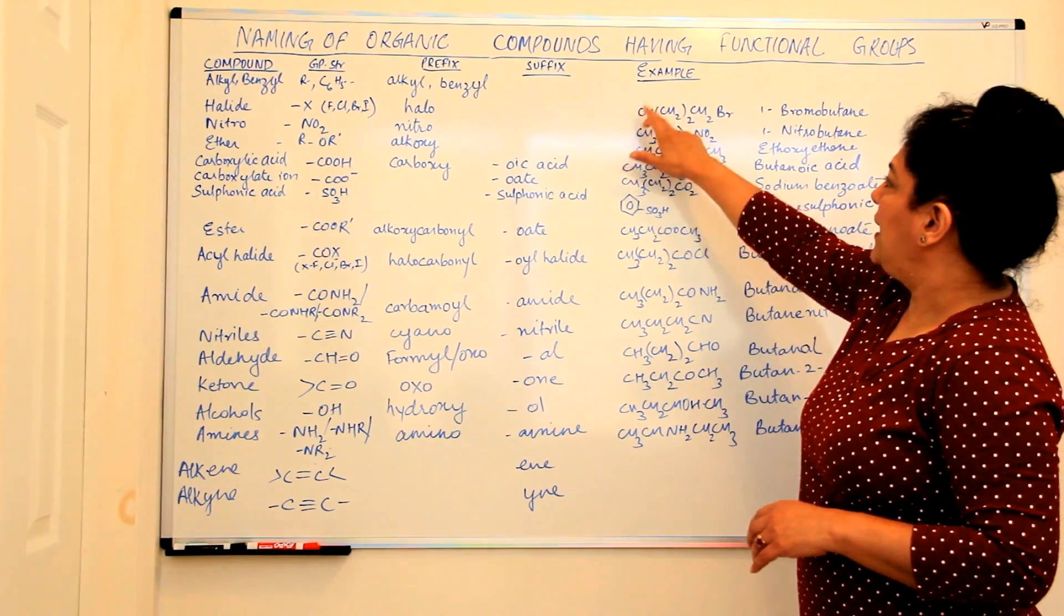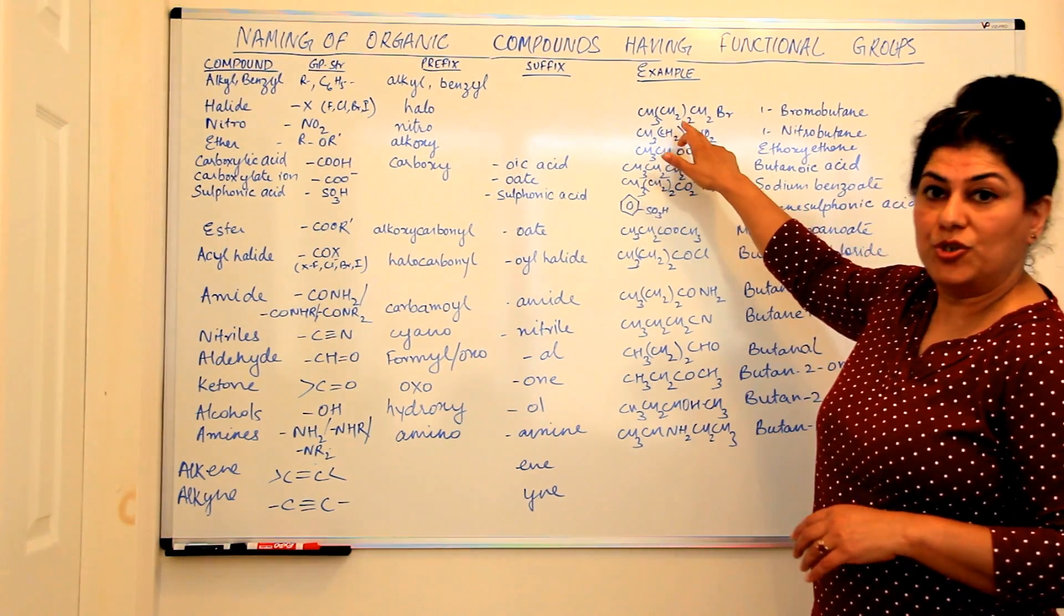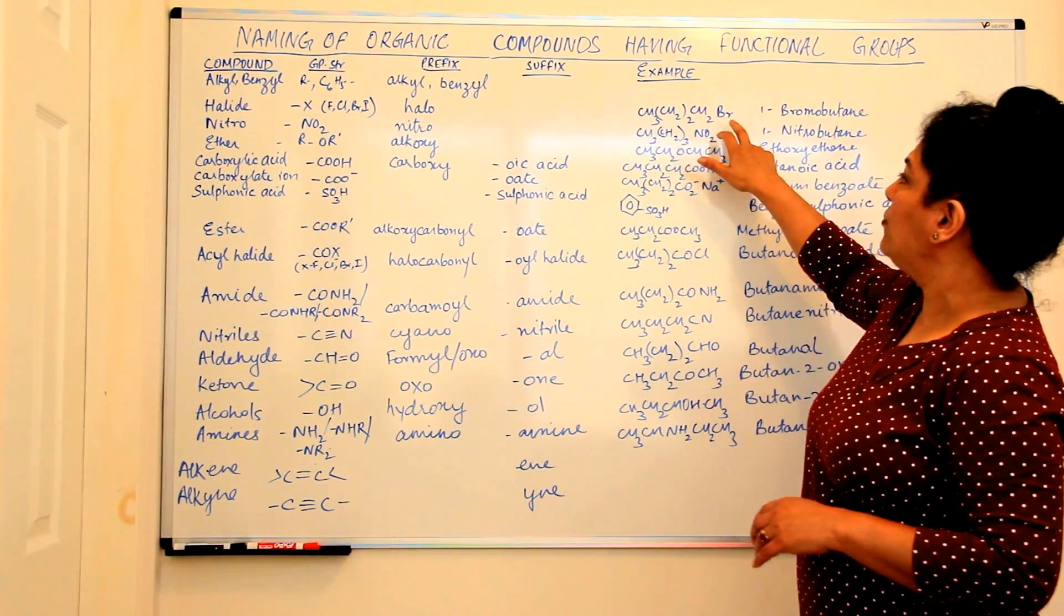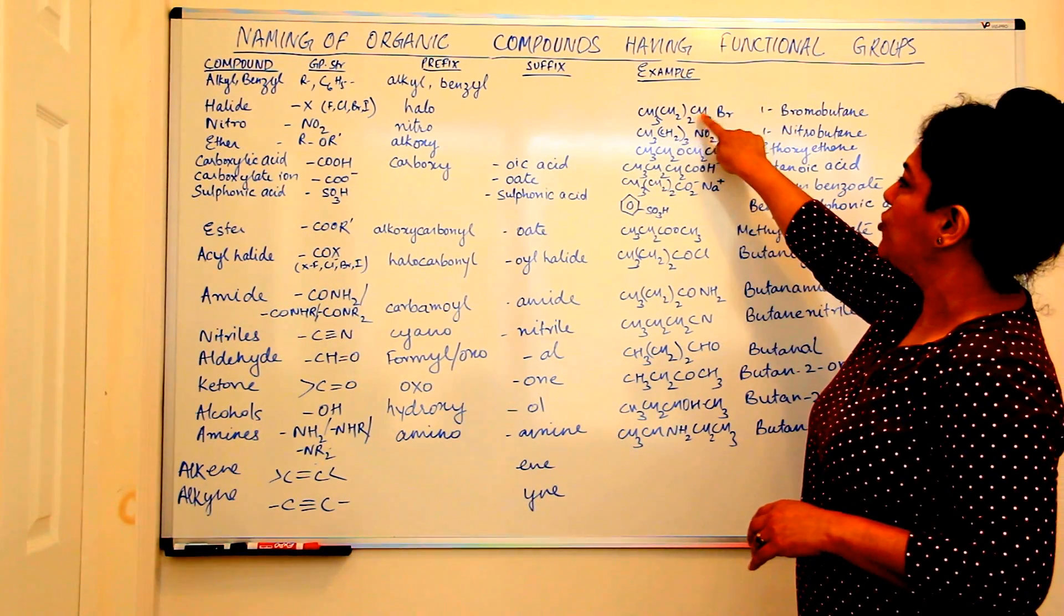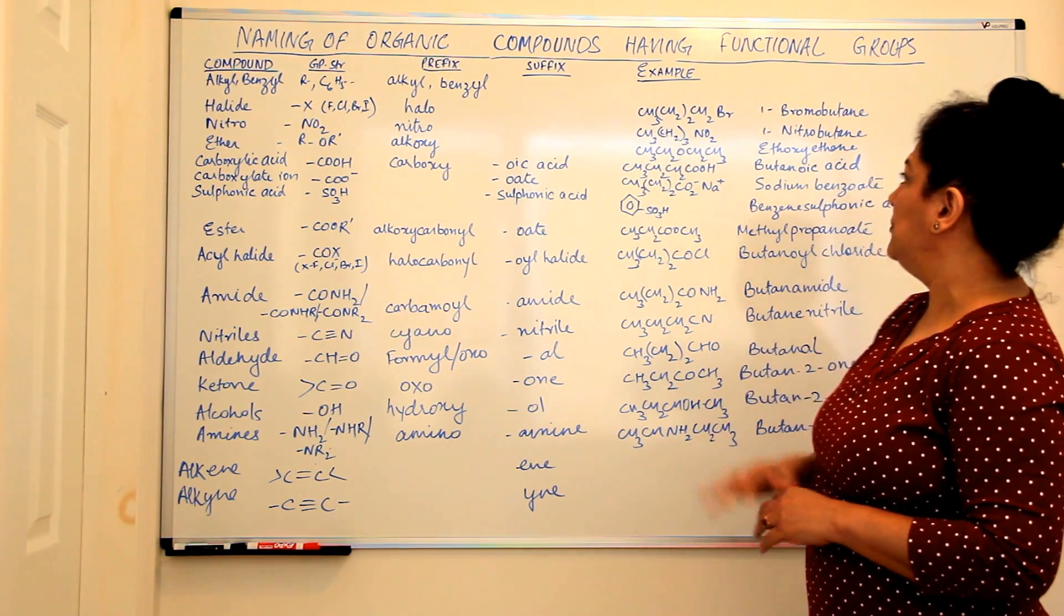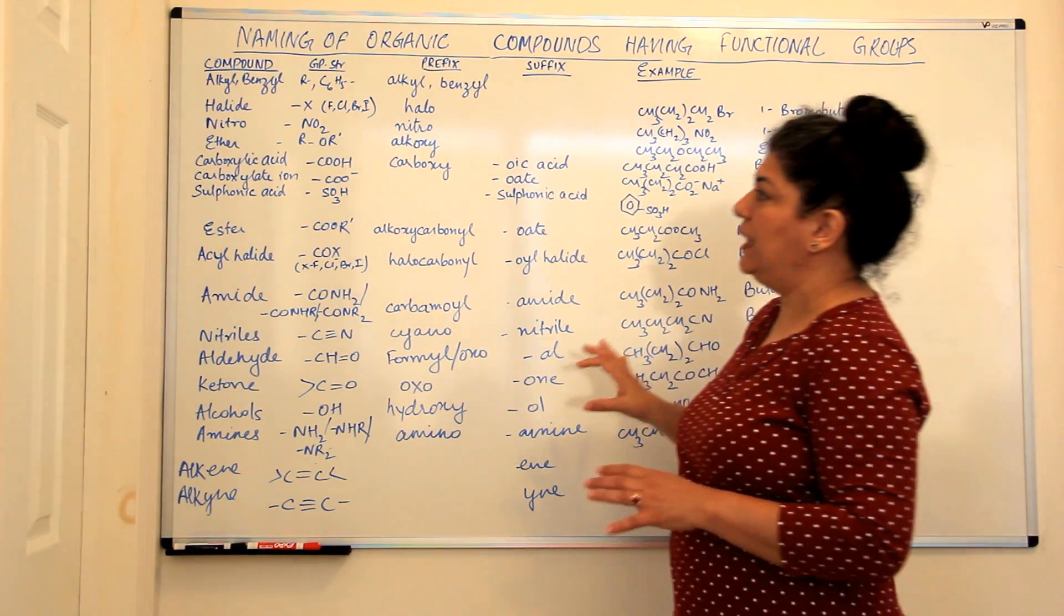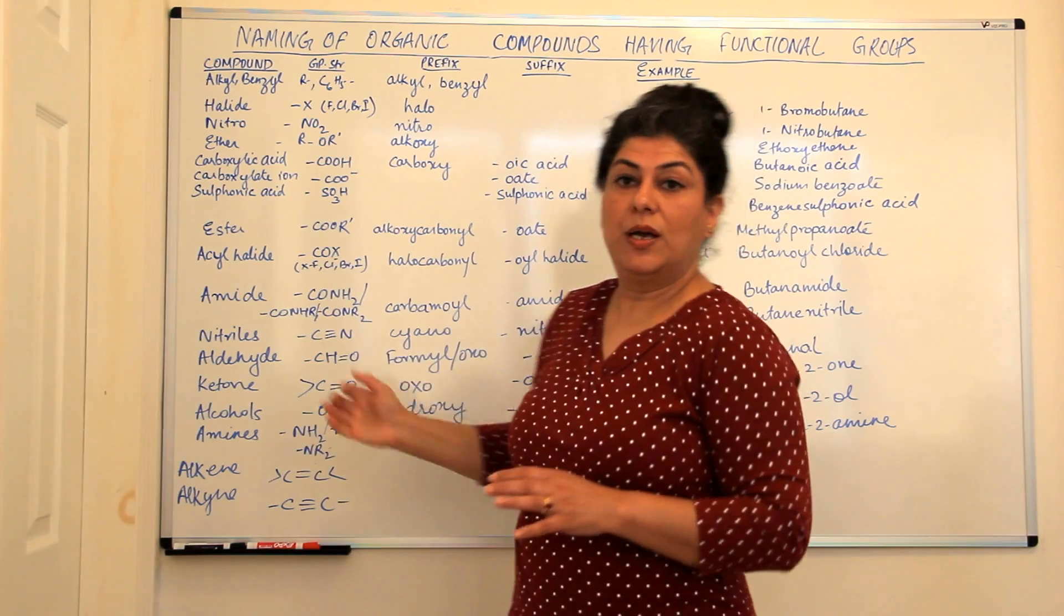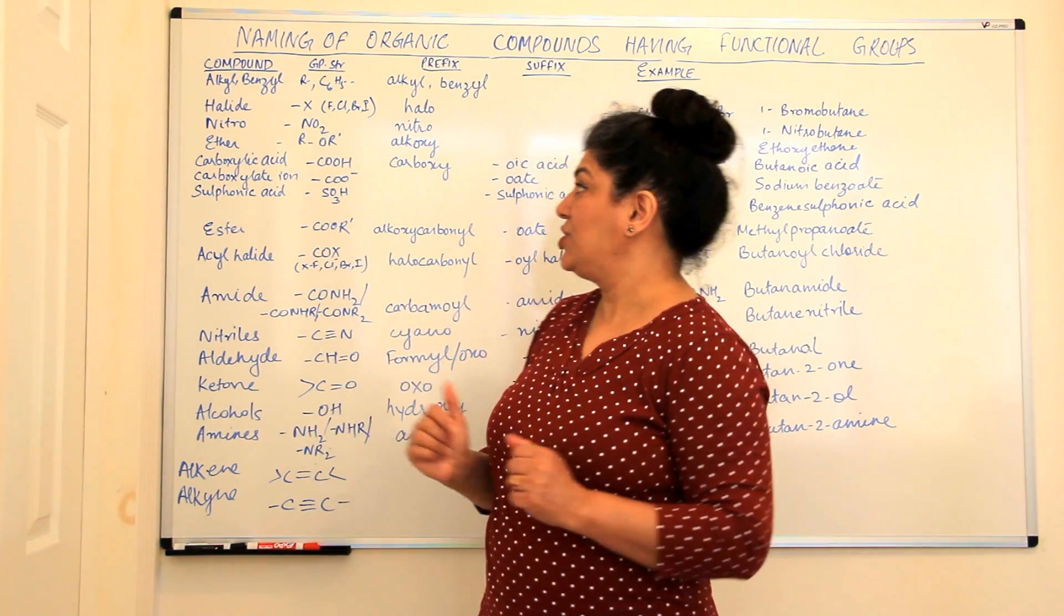For example, if you have this butane and bromine has been substituted in butane, so this compound would be known as one, because the substitution is at the first carbon, it is one bromobutane. But before coming to the actual naming of these, let me tell you about these different functional groups.